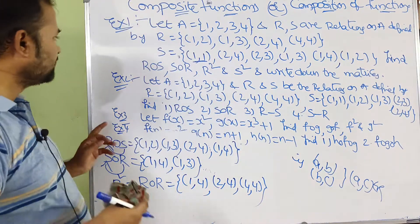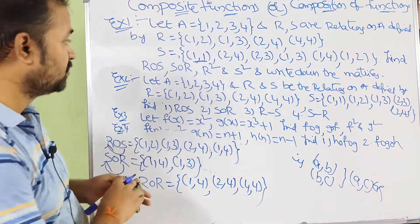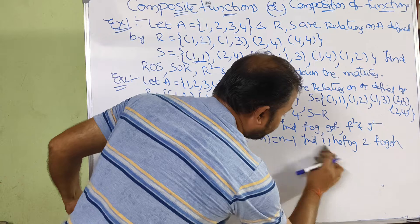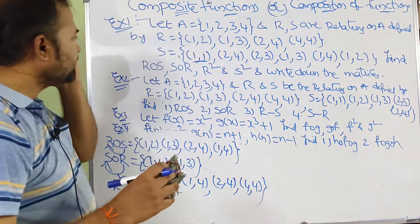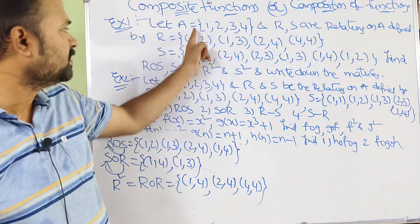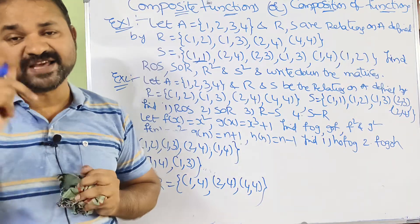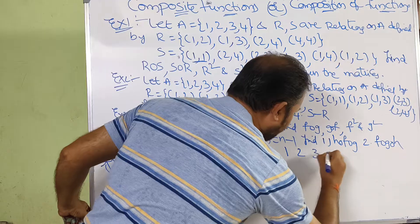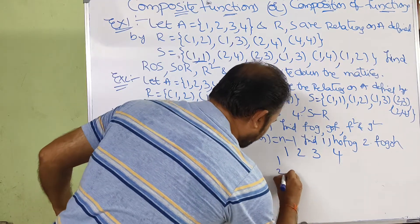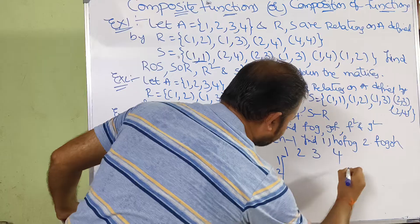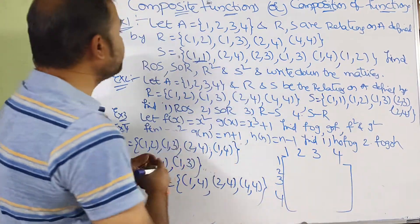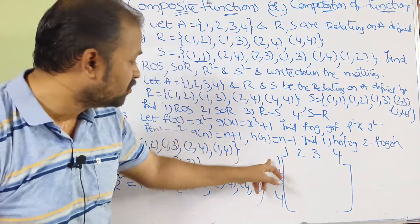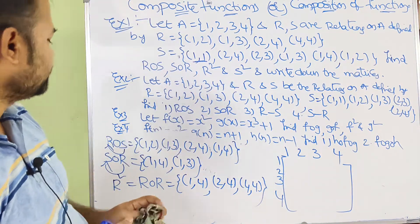Like this you can calculate S² also. Now we have to write the matrices. Here, how many sets are given? Only one set. So the rows as well as columns will be labeled by the set elements 1, 2, 3, 4. So 1, 2, 3, 4 are the row values and 1, 2, 3, 4 are the column values.